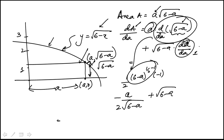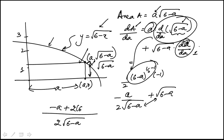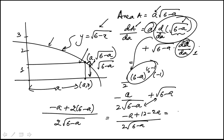Combining over a common denominator of 2 times square root of 6 minus A, the product of those two gives 2 times (6 minus A) in the numerator. The numerator becomes 12 minus 3A over 2 square root of 6 minus A.